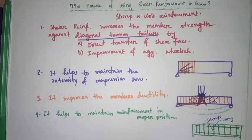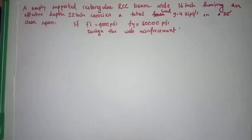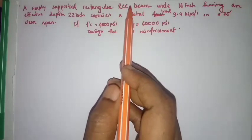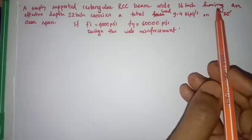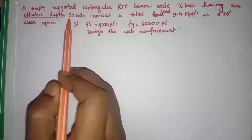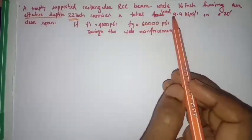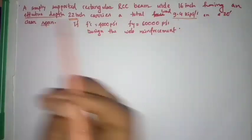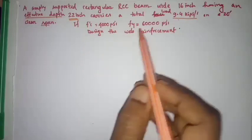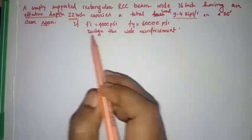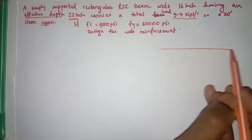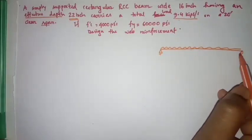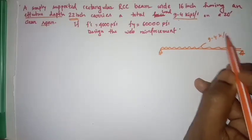Now I am going to solve a problem. It says: a simply supported rectangular RCC beam with width b = 16 inches, effective depth d = 22 inches, carries a total uniform load of 9.4 kips per foot on a 20-foot clear span. Given f'c = 4000 psi and fy = 60,000 psi. Design the web reinforcement.